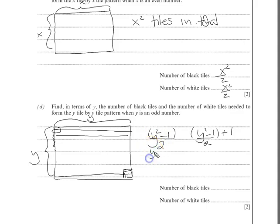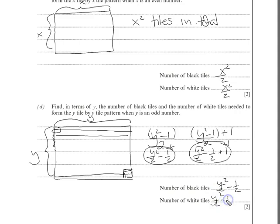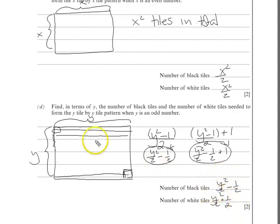The total number of tiles is y squared. Take one off — that excludes the last tile — and half of that is the number of black tiles: (y² - 1)/2. The number of white tiles is that same amount plus one more, which expands to y²/2 − 1/2 + 1 = y²/2 + 1/2. When you add them together, the −1/2 and +1/2 cancel, giving y squared total tiles — which checks out.